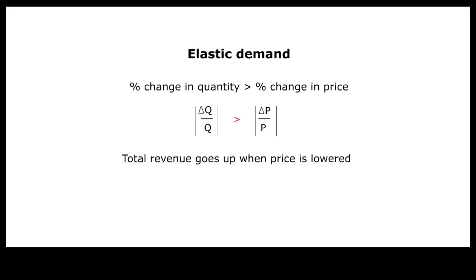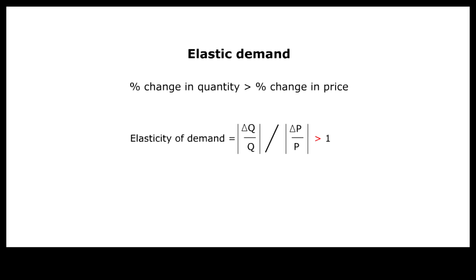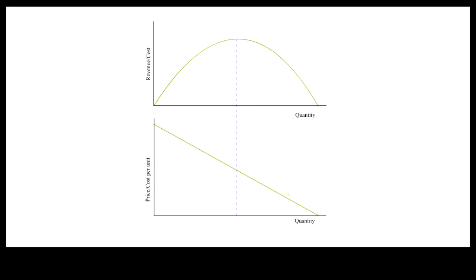If the percentage change in quantity sold is greater than the percentage change in price, total revenue will increase when a lower price is charged. When that happens, demand is said to be elastic and the elasticity of demand has an absolute value greater than one. For example, a 10% price decrease leading to a 20% quantity increase will give you an elasticity of demand with an absolute value greater than one.